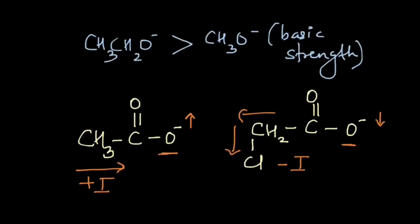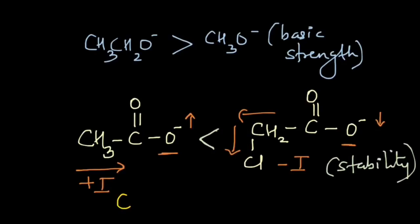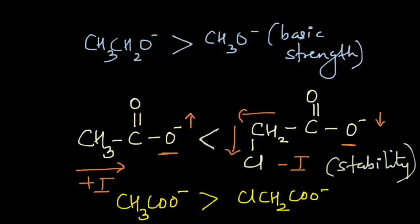Therefore, the acetate ion is less stable than the chloroacetate ion. We know that the basicity order will be the reverse of stability, so CH₃COO⁻ will be more basic than ClCH₂COO⁻. That's how you use the inductive effect to decide the relative strength of acids and bases.